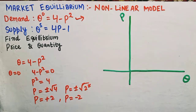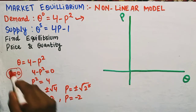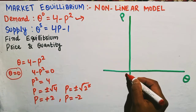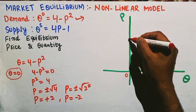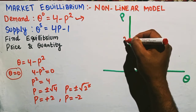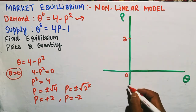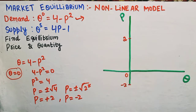So when quantity demanded is equal to 0, price is either positive 2 or negative 2. We mark P = 2 and P = -2 on the price axis.